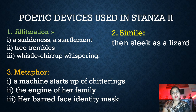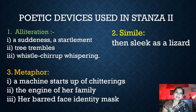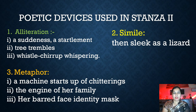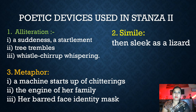A lizard is sleek, smooth, shining, and glossy — in the same way the bird's movement is compared to a lizard's. Metaphor is also used — comparison without using 'as' or 'like'. 'A machine starts up of chitterings' — the tree is compared to a machine. 'The engine of her family' — the engine refers to the nest of the bird where her young ones live. The moment the bird comes and feeds its young ones, it is as if an engine has been started — there is a lot of commotion and noise.